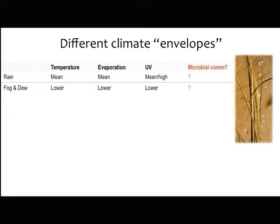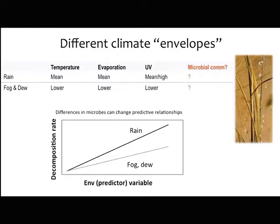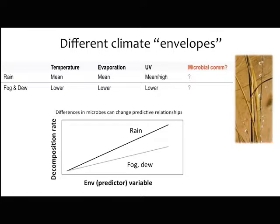This has bearing on ecosystem function because differences in microbes can change the predictive relationships used by models. If there are constraints on the microbial community — trade-offs, different optima, different traits — that change the relationship between some predictor variable and microbial activity, that's going to change model predictions. For example, rain could occur most any time at roughly mean temperature, while fog and dew occur mostly at night, mostly cold, with lower evaporation. These mechanisms are really acting through and modulating microbial function.